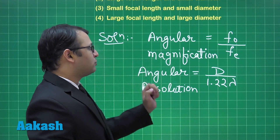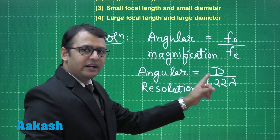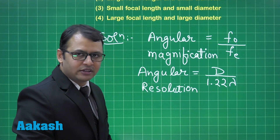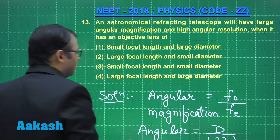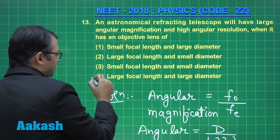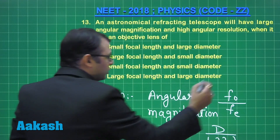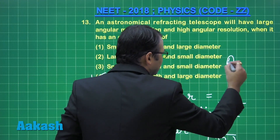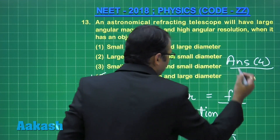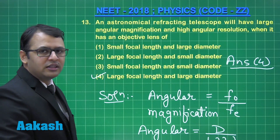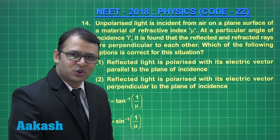We have to choose an option which has large focal length and large diameter. The fourth option — large focal length and large diameter — will be the correct answer. So the answer for this question is option number 4. Let's move forward to the next question.